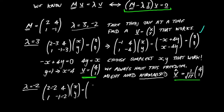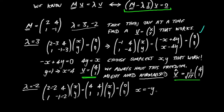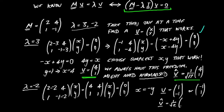Tidying that up: we get 4, 4, 1, 1 times x, y equals 0, 0. As before, this is the same equation twice — there's only one constraint. We can read it off simply as x equals minus y. If I choose x equals 1, the eigenvector is 1, minus 1. Or choosing y equals 1 gives minus 1, 1 — both are correct eigenvectors for eigenvalue minus 2. If we want to normalize, we divide by the magnitude 1 over root 2.